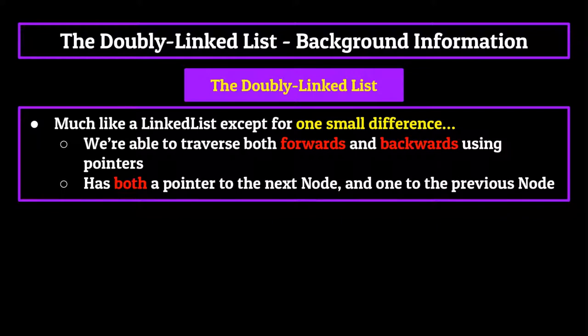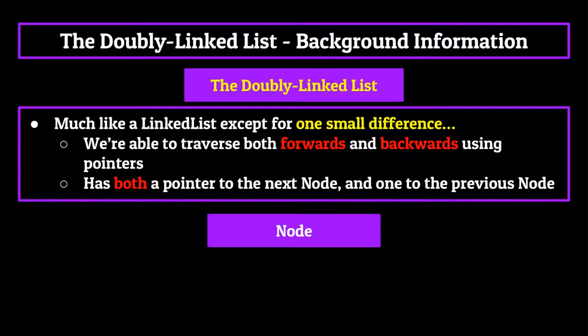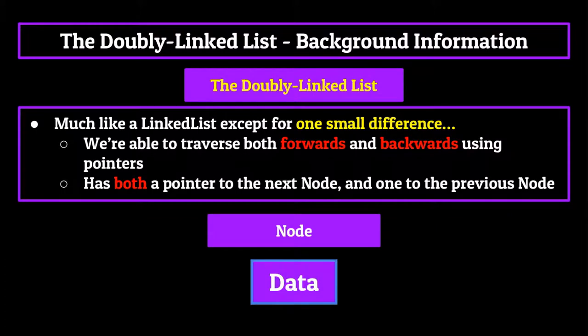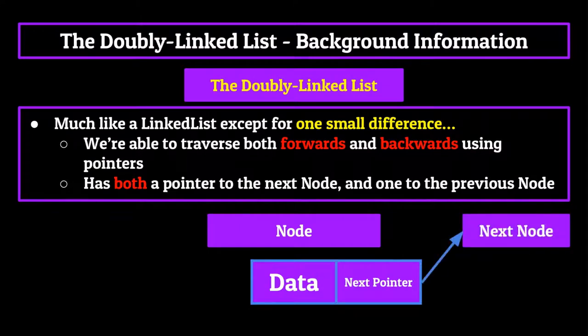With a regular linked list, each element was a node composed of both a data section and then a pointer which would take you to the next node in the list. Using this, we were able to traverse a linked list easily to search for information, access data within a linked list, or add and remove nodes from within the list with ease.